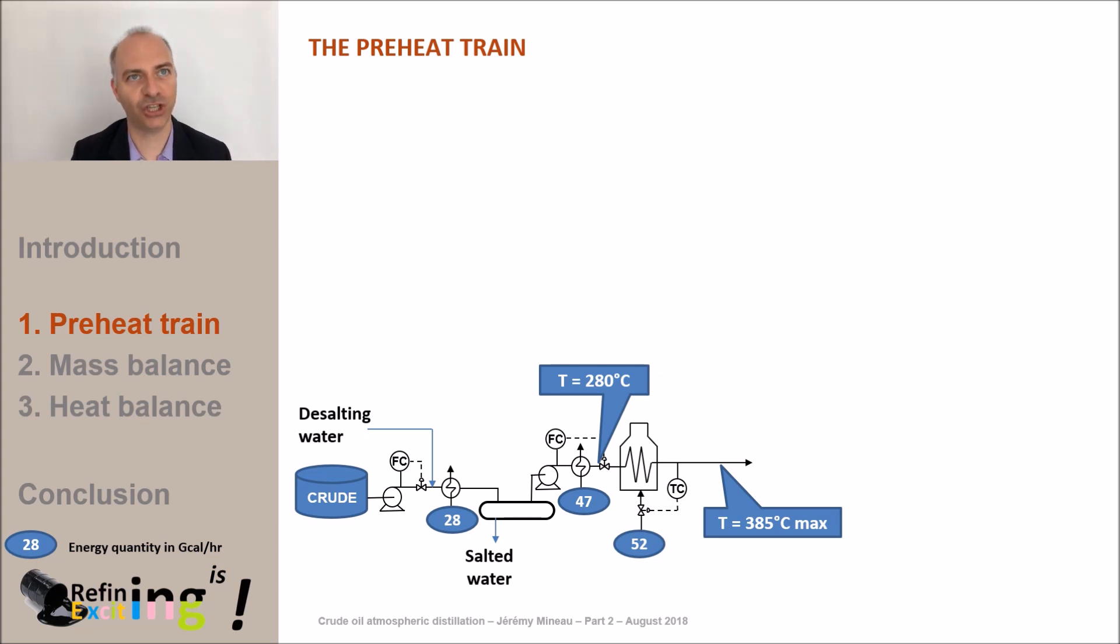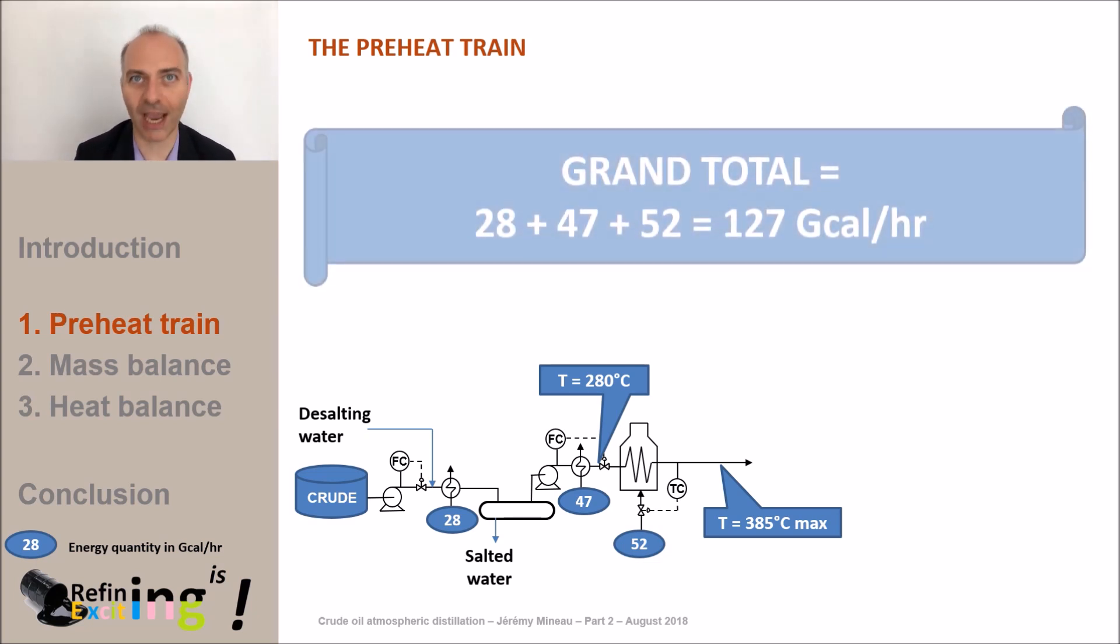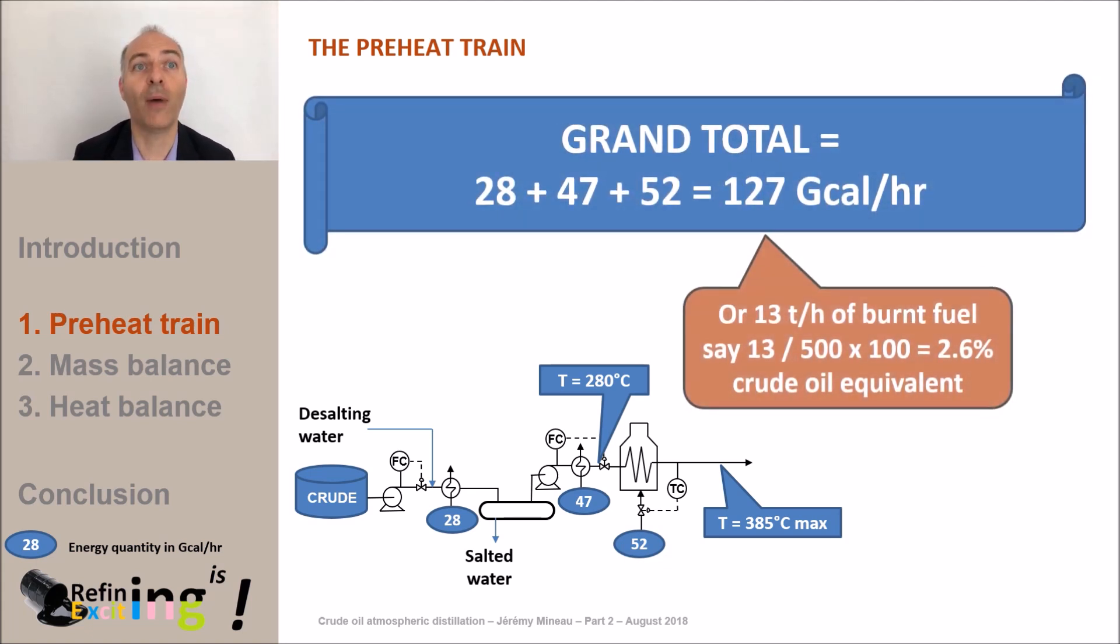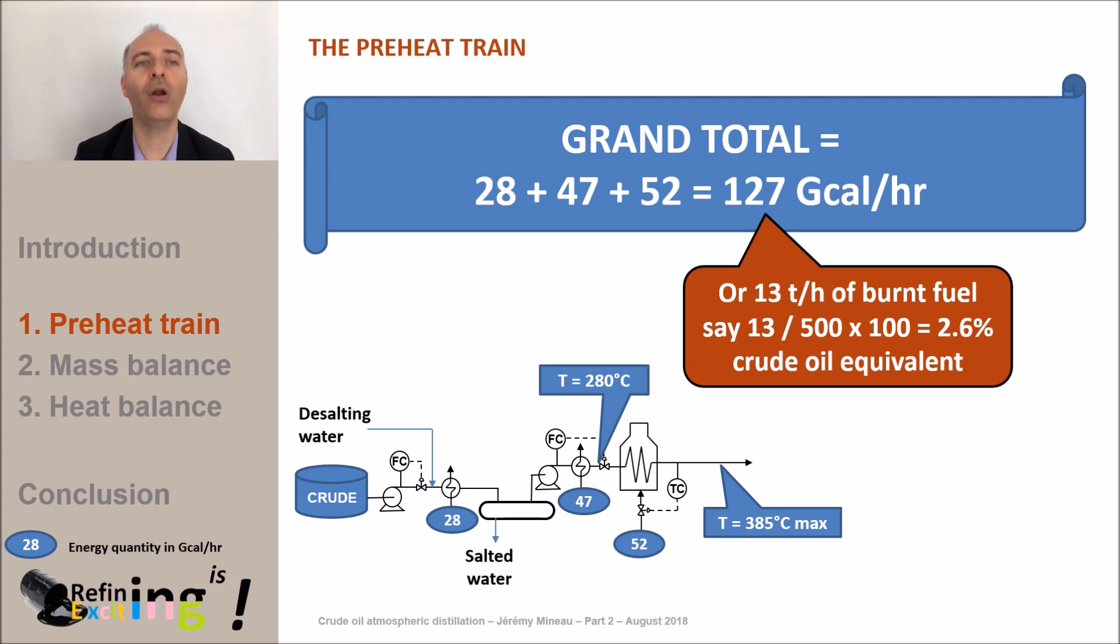If we make the addition of all the energy demand, we see that about 127 gigacalories per hour of energy is required. This is equivalent to about 13 tons per hour of burnt fuel, or about 2.5 percent of the crude. This is huge. We will see in the following videos how to optimize this energy consumption.